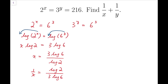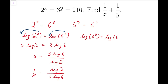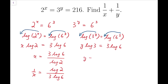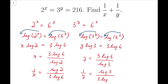We can do similar things on the second equation. Again, taking logarithms and moving the indices to the side of the logarithm, which means y times log 3 equals 3 times log 6. So y is equal to 3 times log 6 over log 3, and hence 1 over y equals log 3 over 3 times log 6.